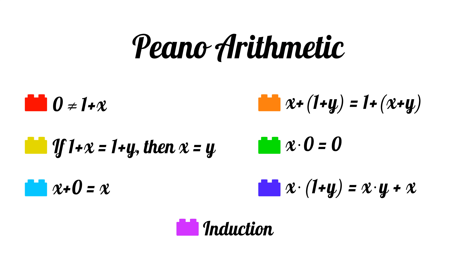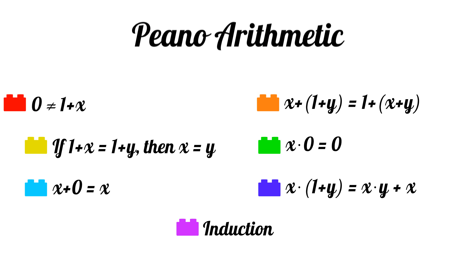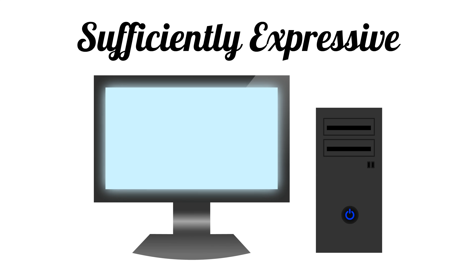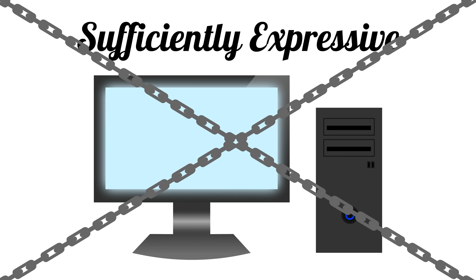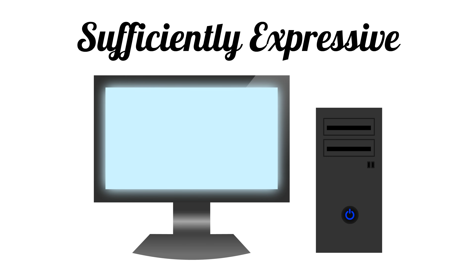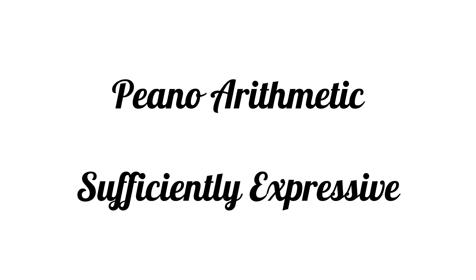So, what properties would we like for our own math system? Well, we'd like it to be powerful enough to be interesting. So we say we want it to be sufficiently expressive, or strong enough to describe computation. Given how complex our technology has become, this may sound pretty restrictive, but it's not. A system doesn't need too much to describe computer programs. Even a simple system, like Peano arithmetic, which we just discussed, is sufficiently expressive.